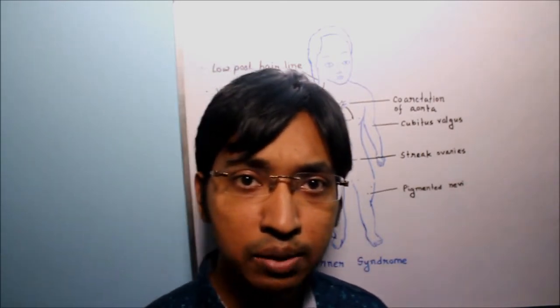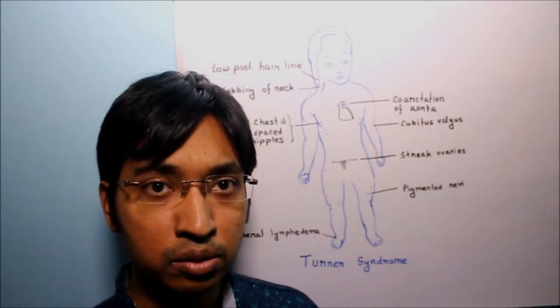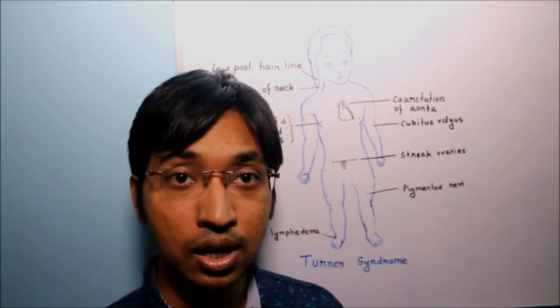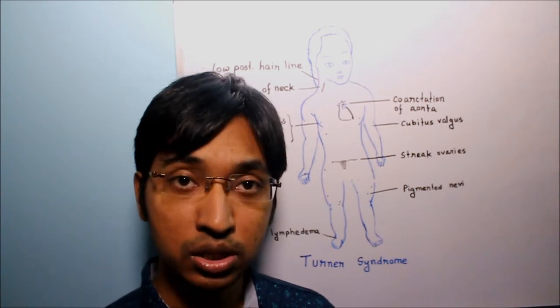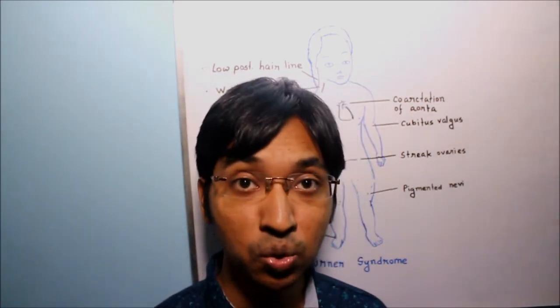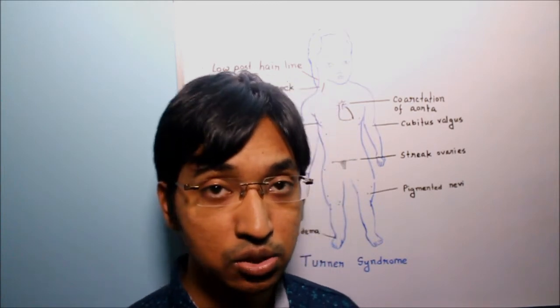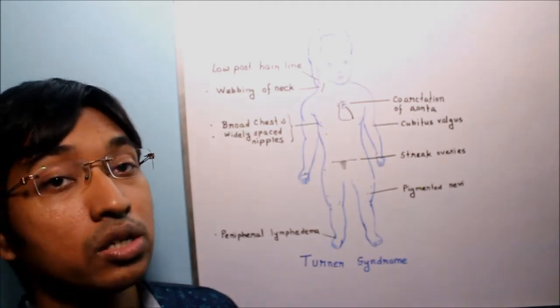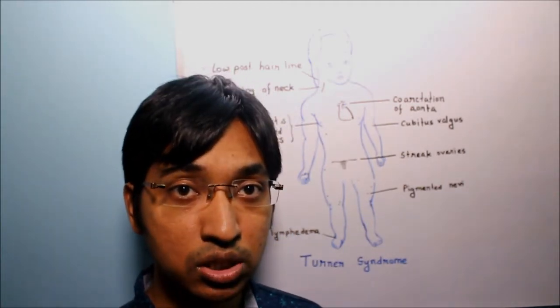Now in 25 to 50 percent cases of Turner syndrome we may also see congenital heart diseases. The left side of the heart is most commonly involved and particularly common among congenital heart diseases in case of Turner syndrome are pre-ductal coarctation of aorta and bicuspid aortic valve.